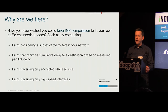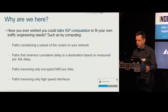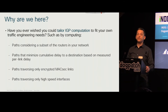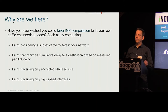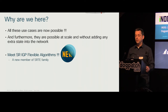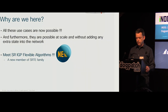So why are we here? We're here to answer questions that many of you may have asked before, such as: can you ask your IGP to compute a path among a subset of your routers — what we call a network slice these days? Can you ask your IGP to compute a path that minimizes delay, or that only uses encrypted links over a subset of your routers? That's the type of challenge we're trying to make real — and it is now all possible. We're going to introduce the latest member of the SR traffic engineering family: SR IGP Flexible Algorithms.